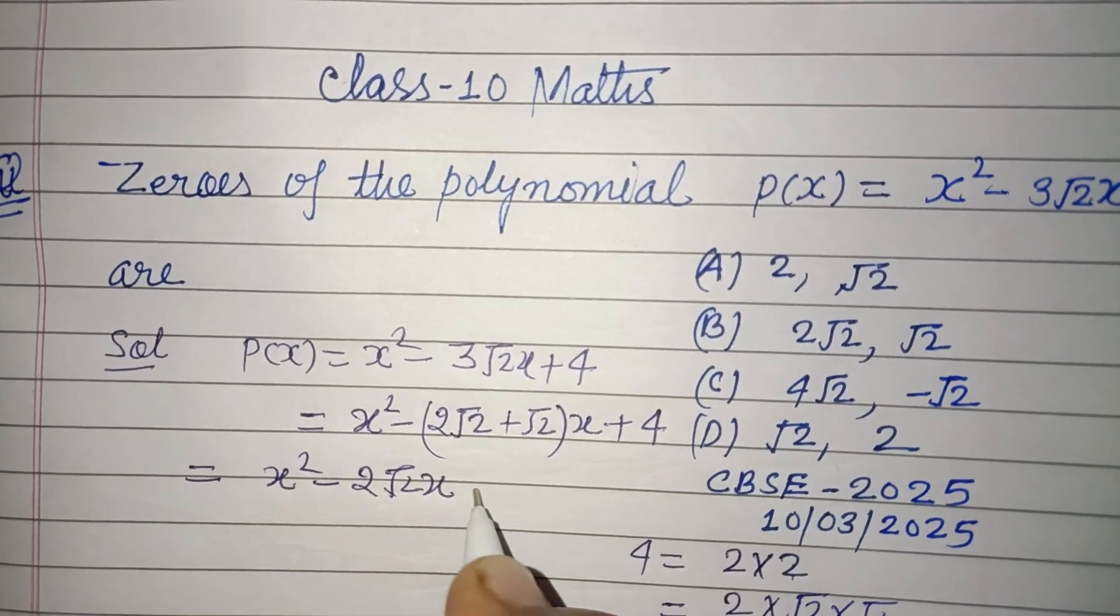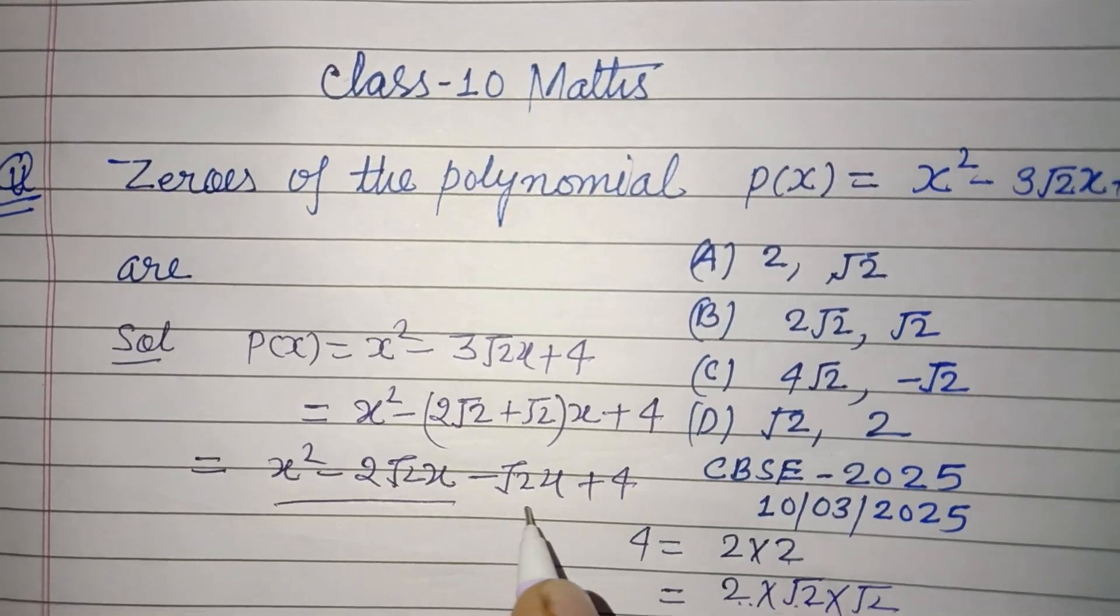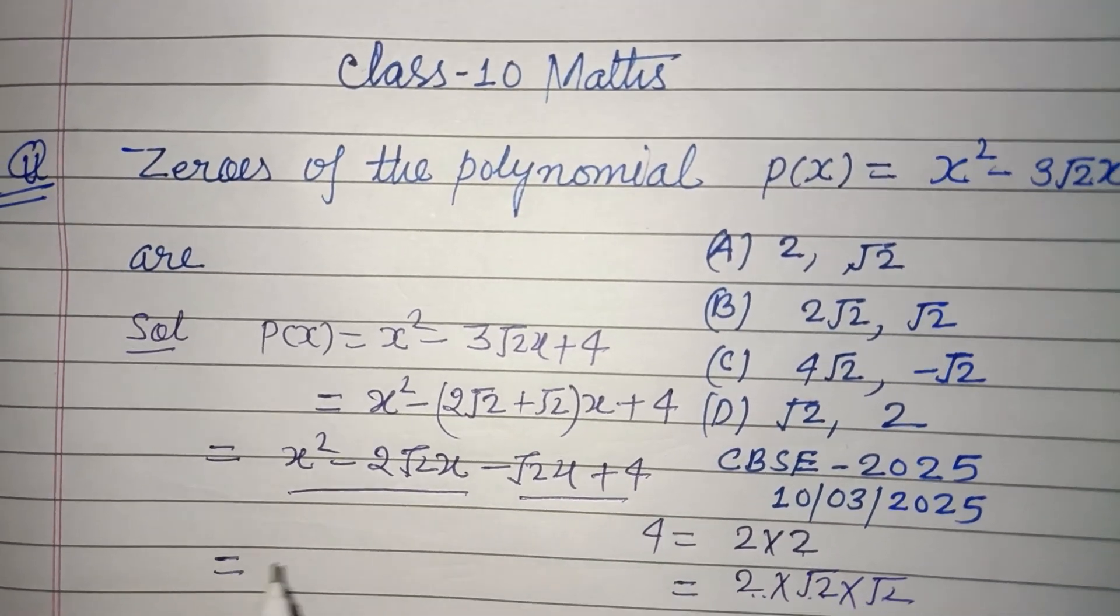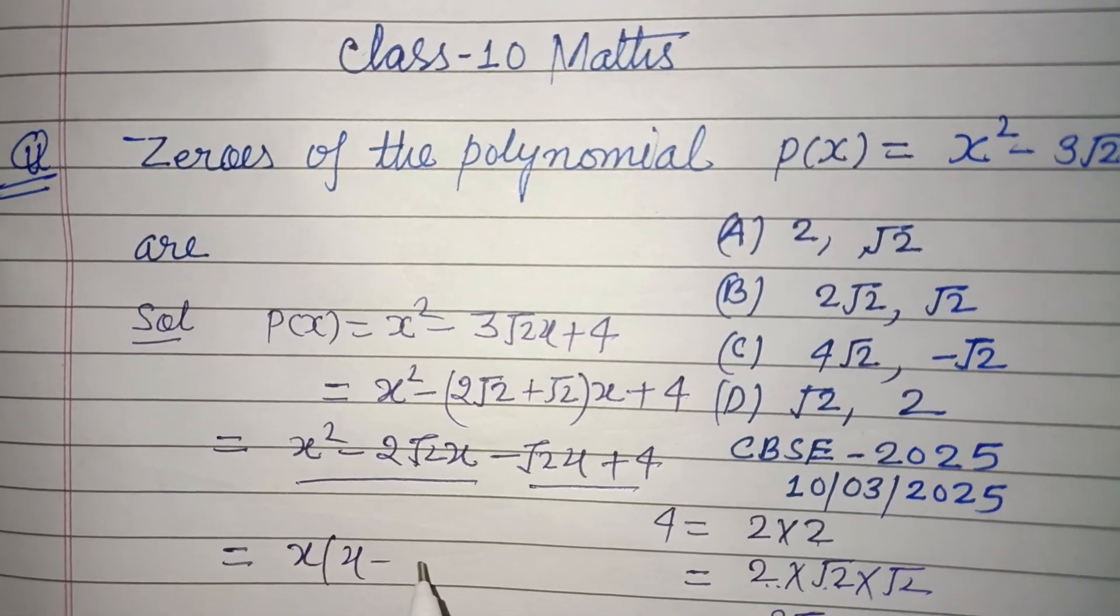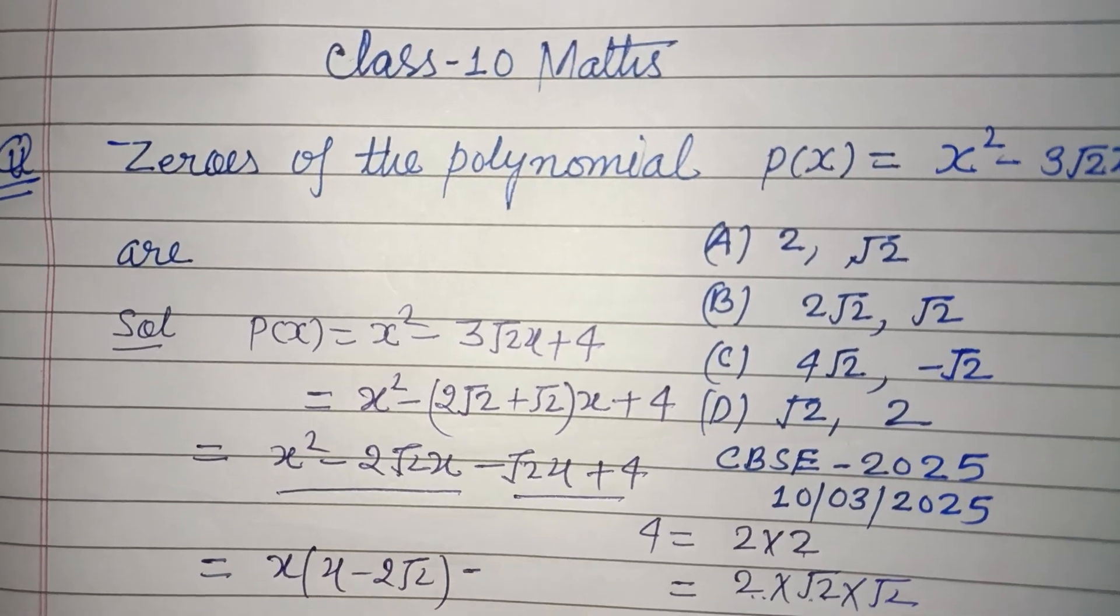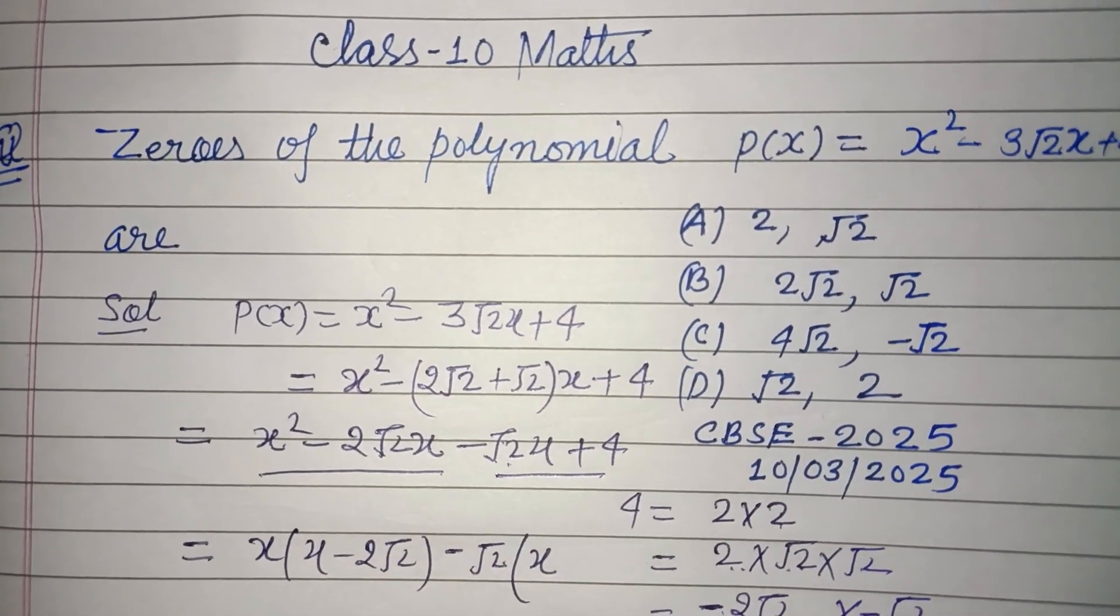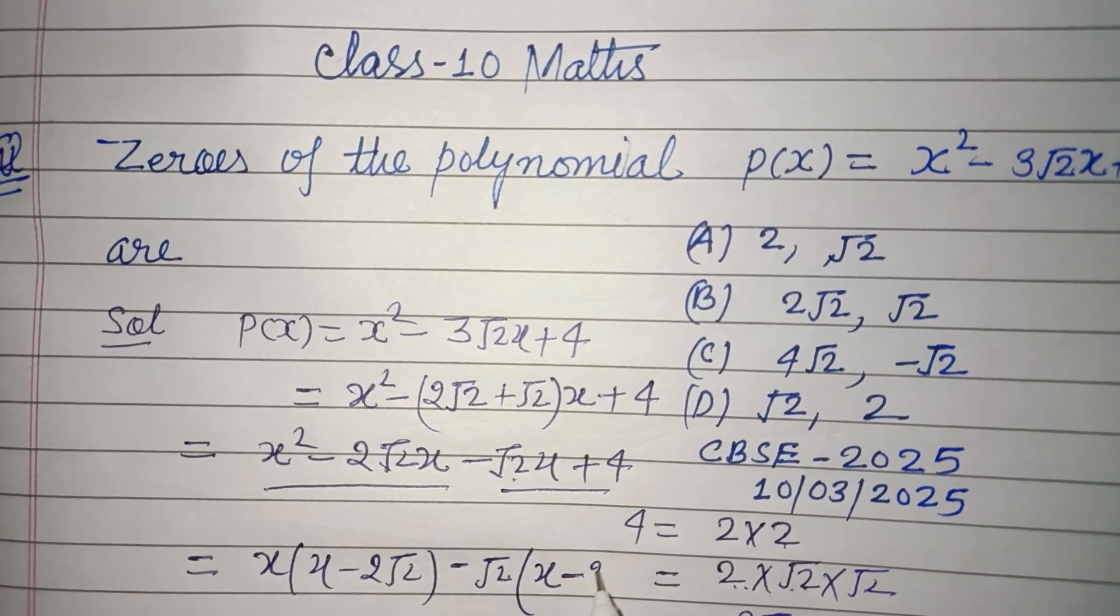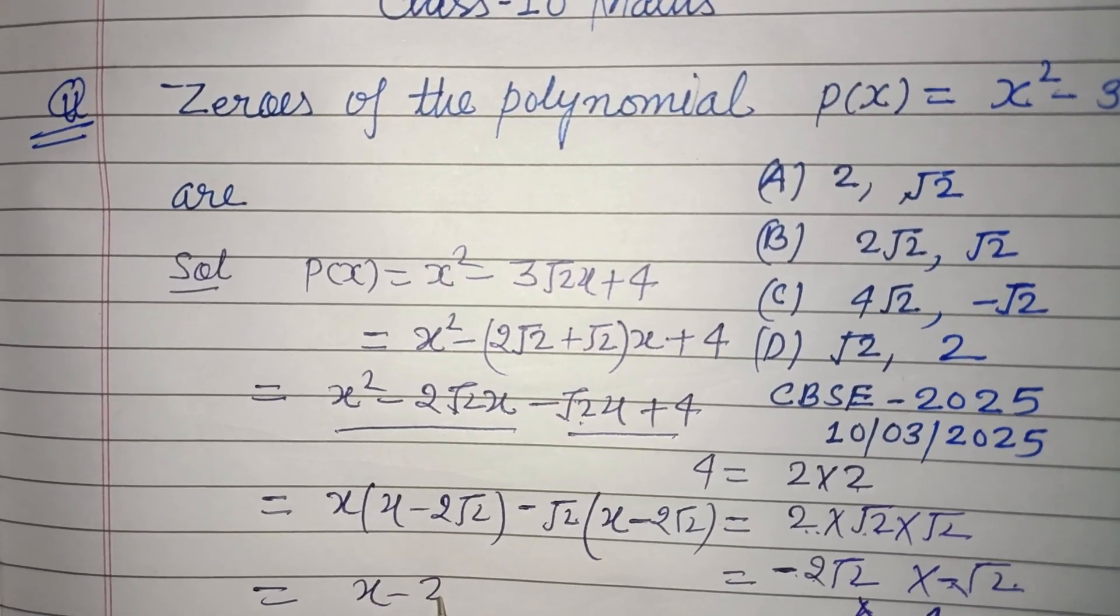Now two pairs become. We take common x from this pair, so x(x - 2√2), and √2 from this pair, so √2(x - 2√2).